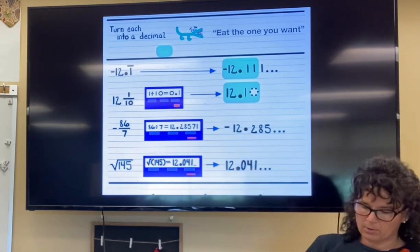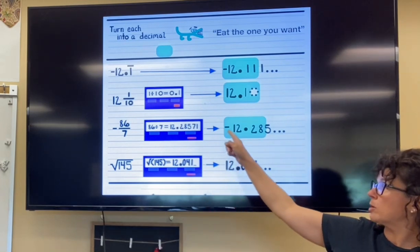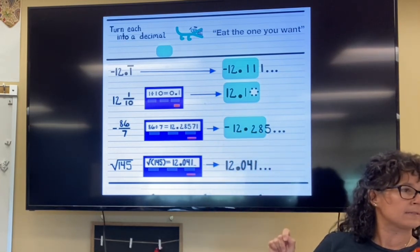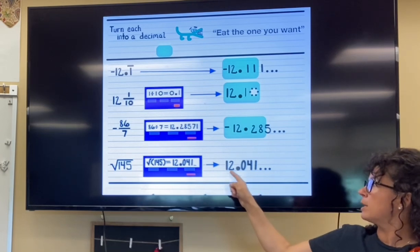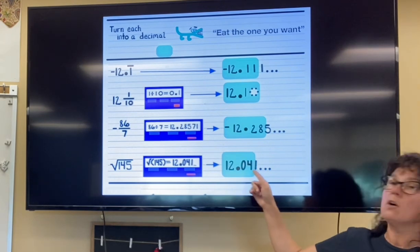This number, again, just focusing on the dollars and cents, this one would be like I owe somebody $12.28. And then this one here, I have $12.04.